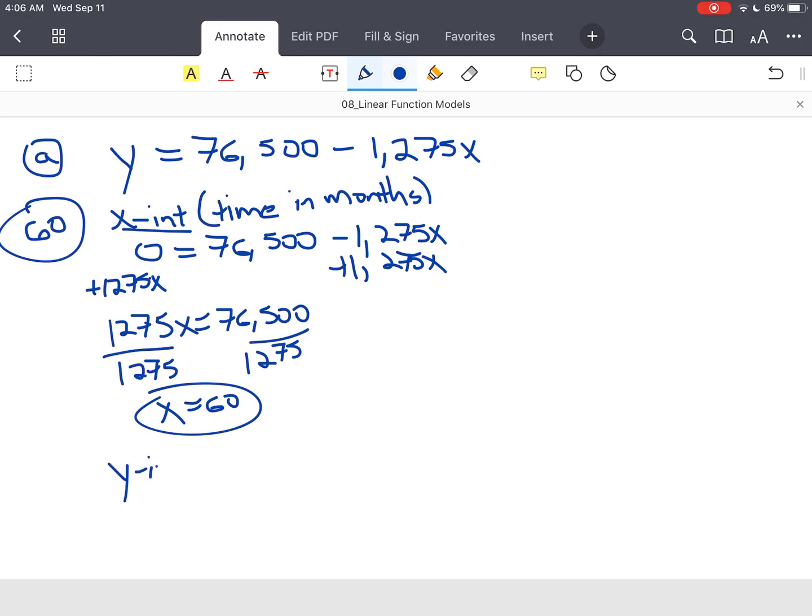Y-intercept, by definition for y-intercept, y equals $76,500. You can take minus 1,275, x is zero. So that goes away. So our initial balance is $76,500, which makes sense. So that was the first question.